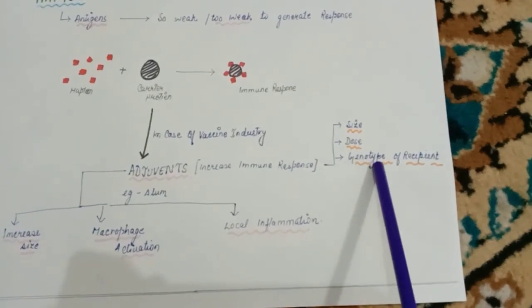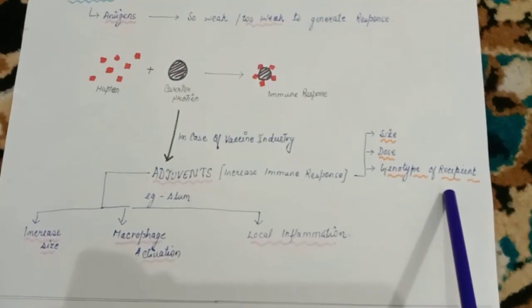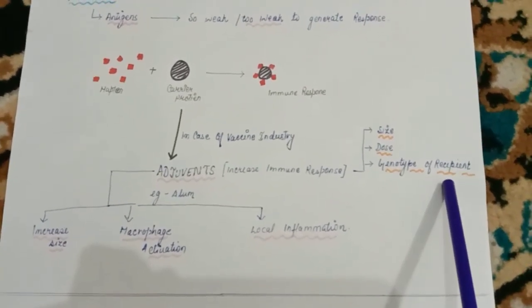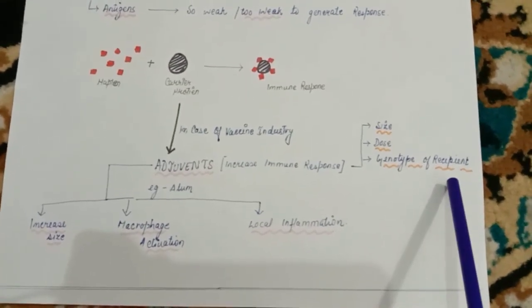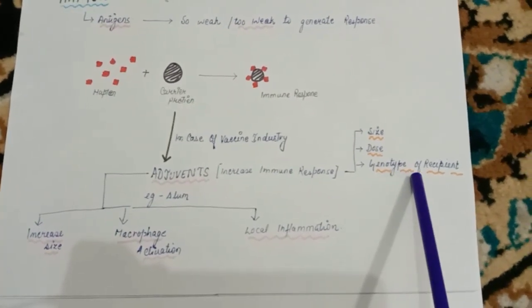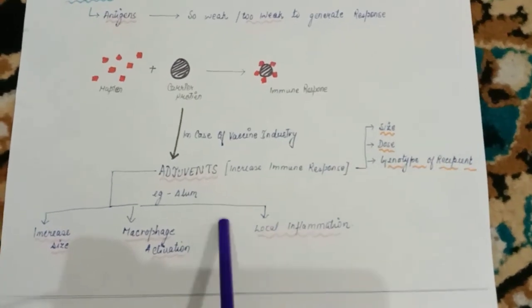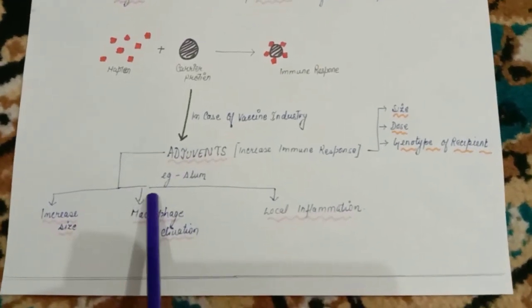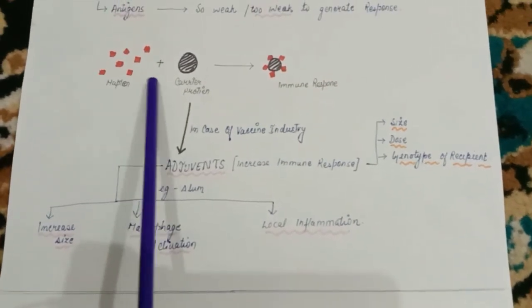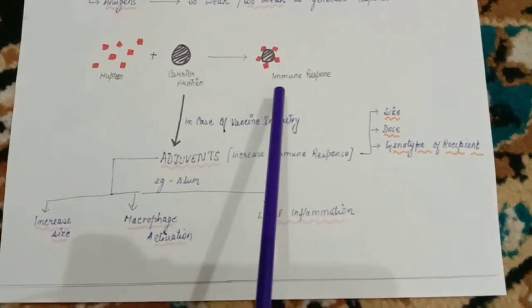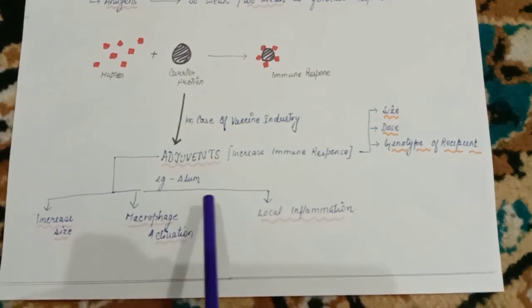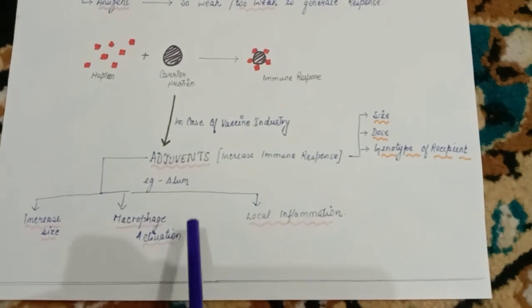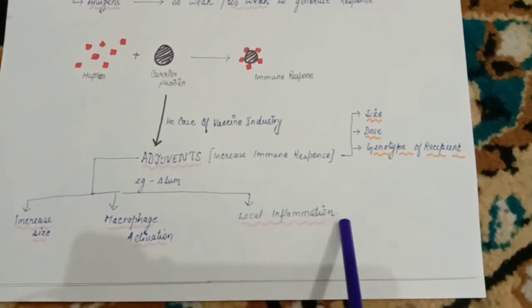Adjuvants are not something exotic — they are the carrier protein or molecule that can enhance the immune response or immunogenicity of hapten molecules. Immunogenicity depends upon size, dose, other factors, and importantly the genotype of the recipient. For example, in the case of coronavirus, not everyone was equally affected — some people died while others only had a cold and recovered. Adjuvants such as alum can increase the size of smaller molecules, activate macrophages as antigen-presenting cells, and create local inflammation to produce a stronger immune response.